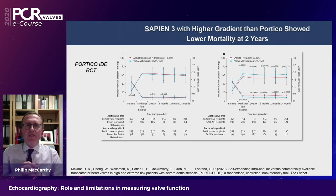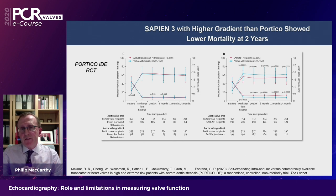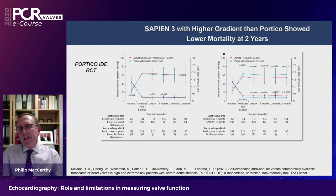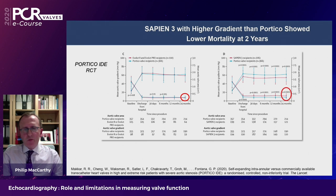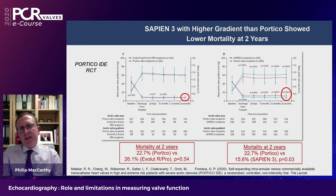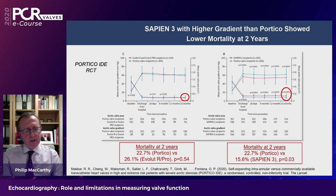The Portico ID randomized control trial compared Portico with the Evolute and with the Sapien. The hemodynamics between Portico and Evolute are similar in terms of EOA and mean gradient. The Sapien appears slightly disadvantageous hemodynamically — slightly lower effective orifice area and slightly higher gradient — yet there is no correlation with outcomes. Mortality at two years is similar between Portico and Evolute, and mortality is actually better with the Sapien valve than with Portico, despite this hemodynamic data both early and late.